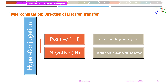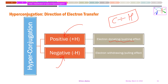Hyperconjugation is classified with respect to the direction of electron transfer — some we call positive and others negative. In positive hyperconjugation, the electrons involved are those present in the C–H bond. These electrons are pushed, giving their electron density to the hyperconjugated system. This is the +H effect, analogous to the +I (inductive) effect and the +M (mesomeric or resonance) effect.